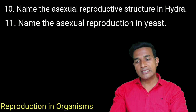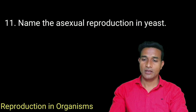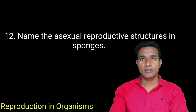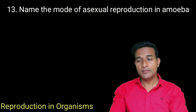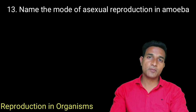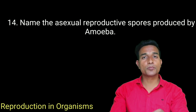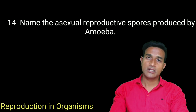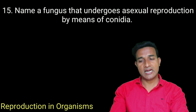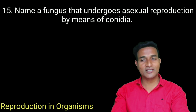Name the asexual reproduction in yeast. It is budding. Name the asexual reproduction in amoeba. It is binary fission. Name the asexual reproductive spores produced by amoeba — pseudopodiospores. Name a fungus that undergoes asexual reproduction by means of conidia. It is Penicillium.